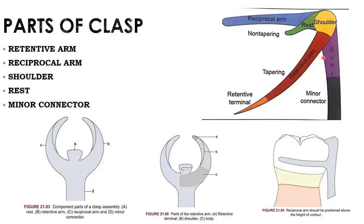The rest provides vertical support and prevents tissue-ward movements of the prosthesis. It ensures that the retentive tip of the clasp remains at the planned depth of the undercut.